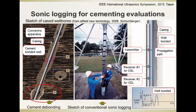This is a schematic of the conventional logging tool used for evaluating cementing quality. It uses symmetric transducers at low frequencies. This type of tool can effectively evaluate cementing quality at the interface immediately behind the casing, but it cannot reach the interface between the cement and the formation. So this is the problem we need to address.